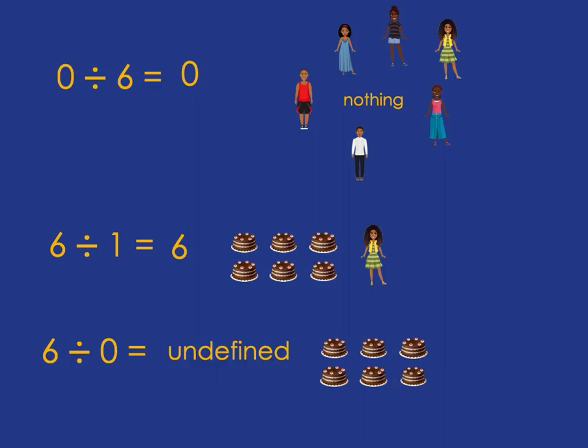And let me just really hopefully convince you completely that it is undefined. It doesn't make any sense by just reminding you about the relationship between division and multiplication. So, you know, for example, we saw 6 divided by 3 is 2 means 2 times 3 is 6.